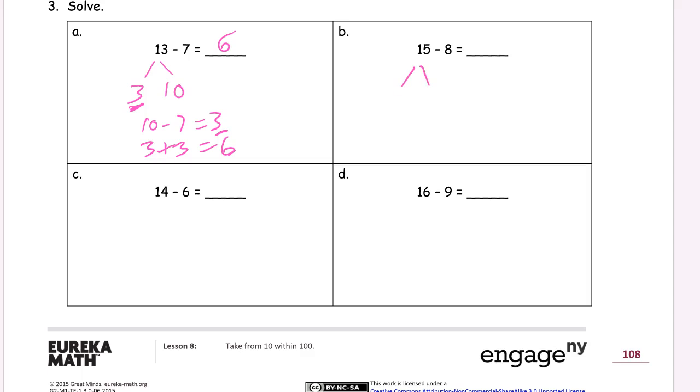6. 15, take out a 10. 10 and 5. We're going to subtract the 8 from the 10. We're taking from 10, so that's 10 minus 8. That's 2. And then we're going to add this 2 and that 5. That's the left of the 2 parts.